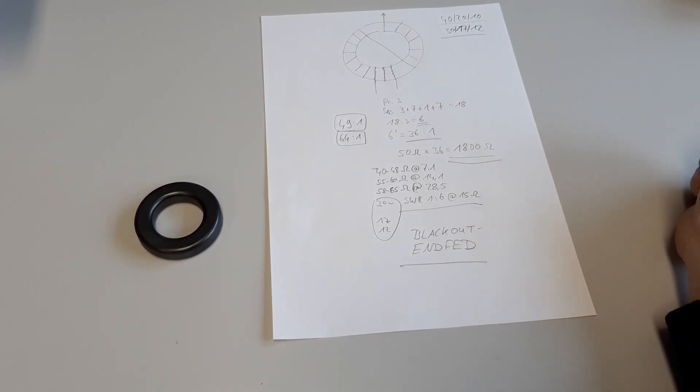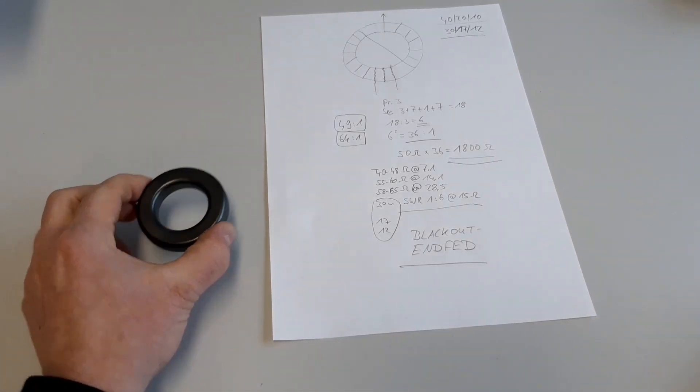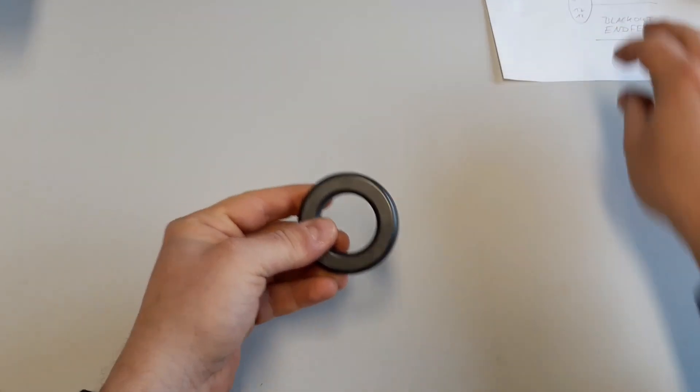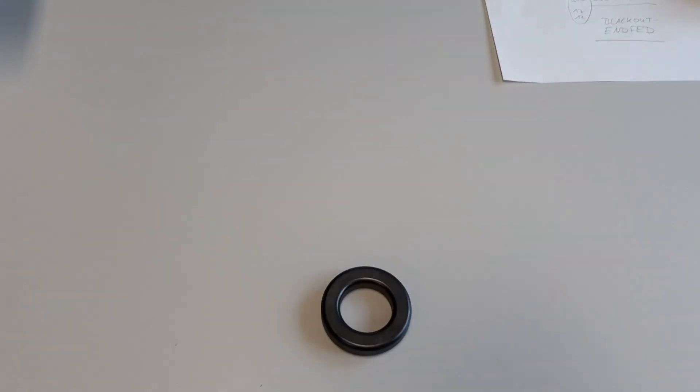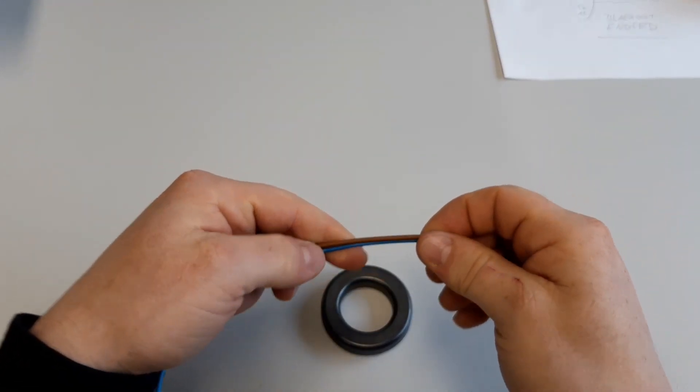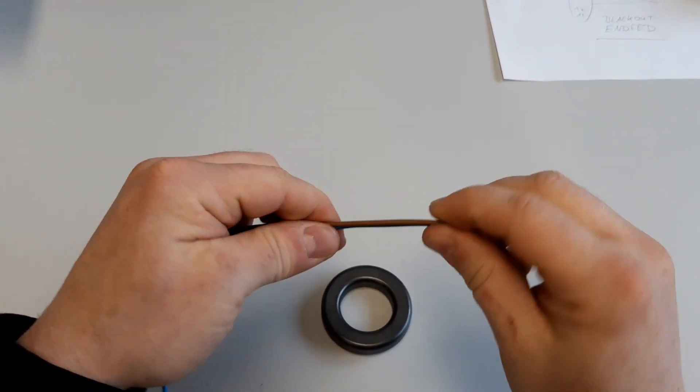But anyway, we go out and we'll check if we can do some contacts on 17, maybe on 12, and today it's the 10 meter contest. Maybe we can catch someone on 10. Okay, let's check the windings here. I will prepare some wires to show you how to wind the toroid correctly.